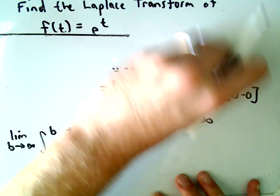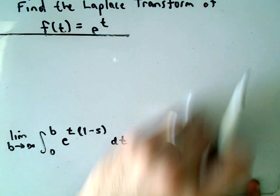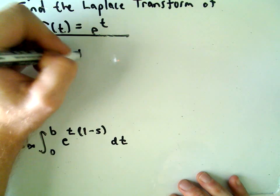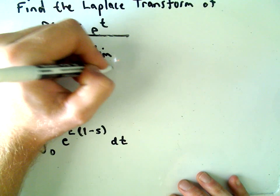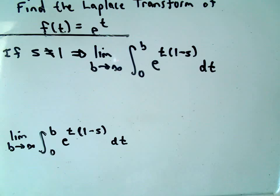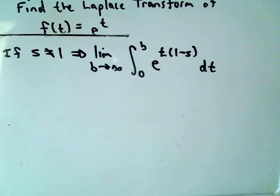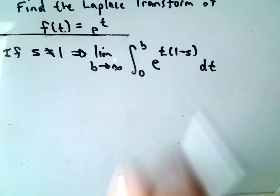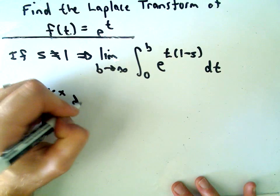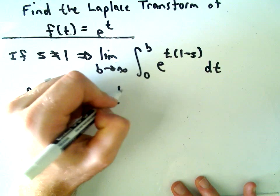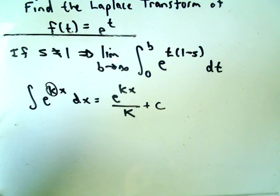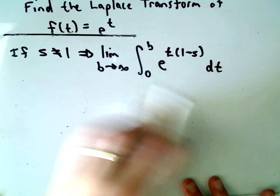So what happens if s is not equal to 1? We compute the limit as b goes to infinity of the integral from 0 to b of e to the t times (1 minus s) dt. This is simply an exponential function — we can treat 1 minus s as a constant since we're integrating with respect to t. Recall the formula: the integral of e to the kx dx equals e to the kx divided by k, plus C. We'll use that same formula here.